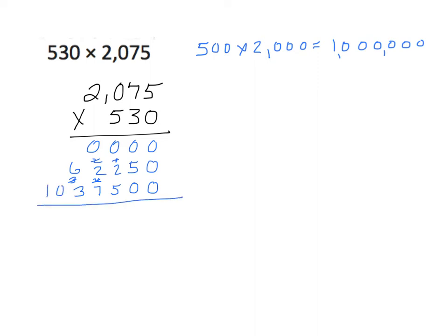Let's take those partial products and add them up. 0 plus 0 plus 0 is 0. Next place: 0 plus 5 plus 0 is 5. Hundreds place: 2 plus 5 is 7. Thousands place: 2 plus 7 is 9. Then 6 plus 3 is 9. And we have a 0 and a 1. We'll put in our commas, and we can see that our estimate tells us that's a reasonable answer.